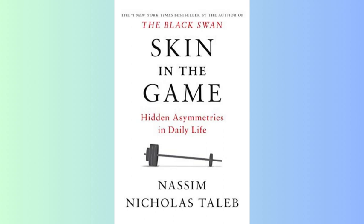Roman emperors and monarchs traditionally faced many physical risks to legitimize their rule. They derive authority from a social contract where they protect citizens in exchange for power and status. Today's centralized bureaucracies separate decision-makers from the consequences of their actions. This needs to be fixed through decentralization, distribution of responsibility, and accountability. Otherwise, the system will collapse under accumulating imbalances and black swan events. The 2008 financial crisis is an example — bankers transferred risk to taxpayers while keeping profits.